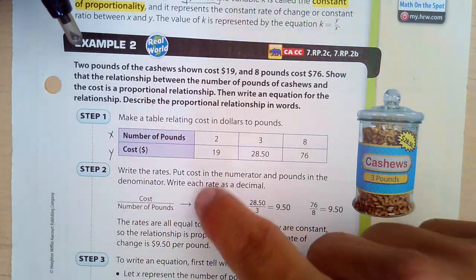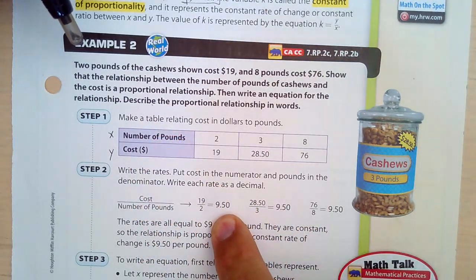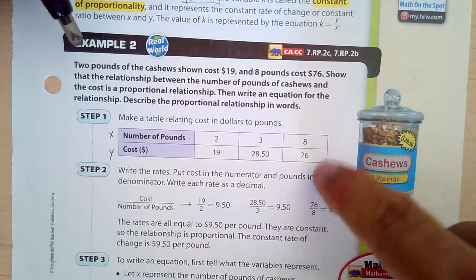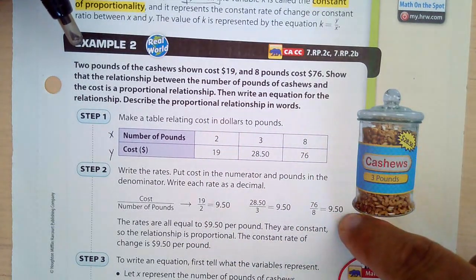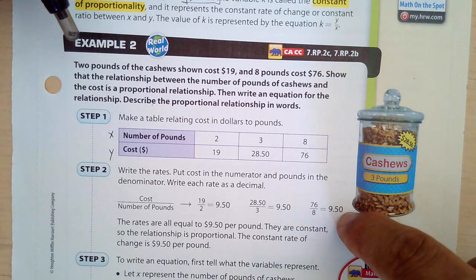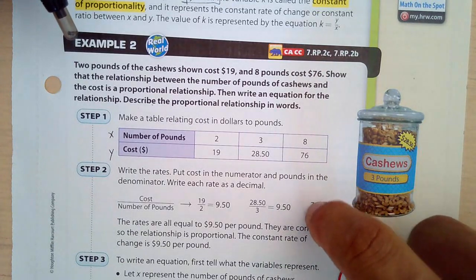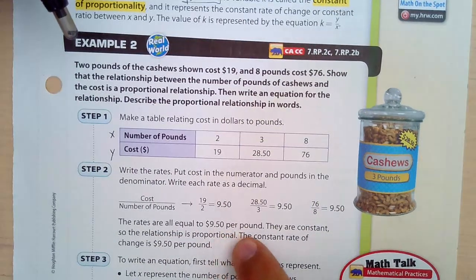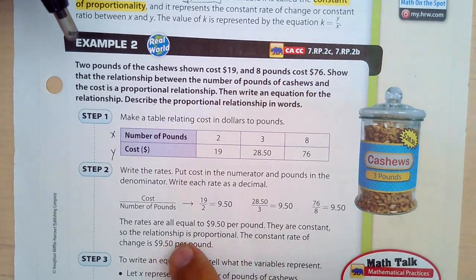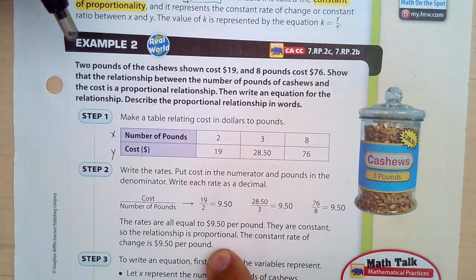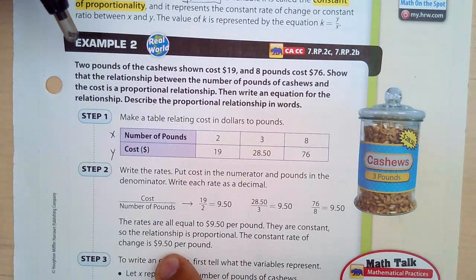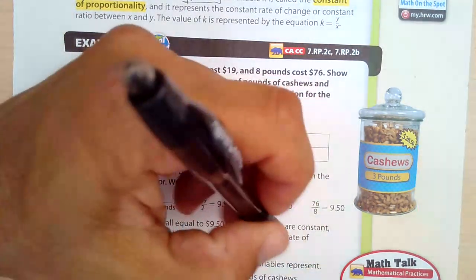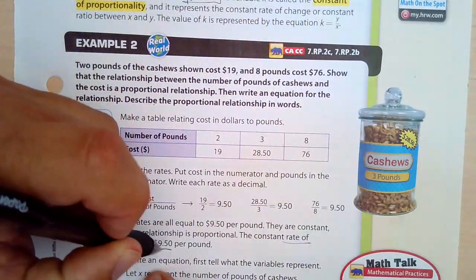So we have Y over X cost over number of pounds, Y over X. 19 over two, that's equal to 9.5. 76 over eight, 76 over eight, Y over X is 9.5. You can check that with a calculator. 76 divided by eight. So the rates are all equal to 9.5, $9.50 per pound. And they are constant. So relationship is proportional. Yeah. The constant rate of change is $9.50 per pound. So the rate of change, look at that. Rate of change is 9.50. That is K when we're looking at Y equals KX.